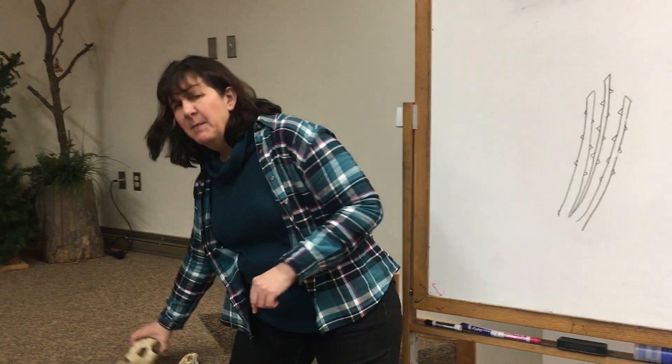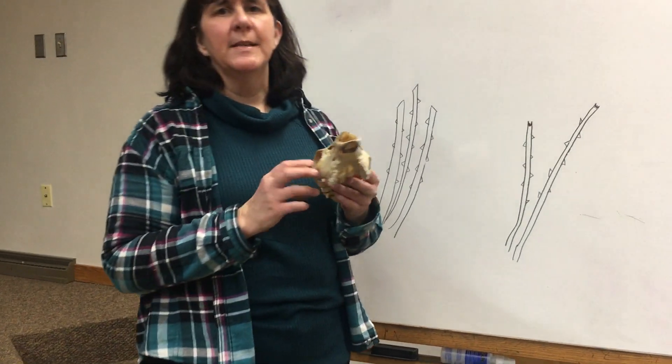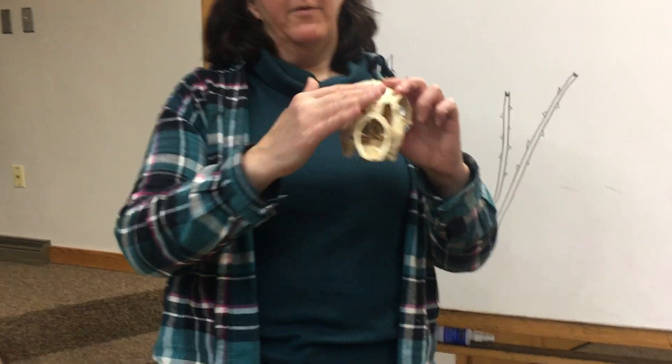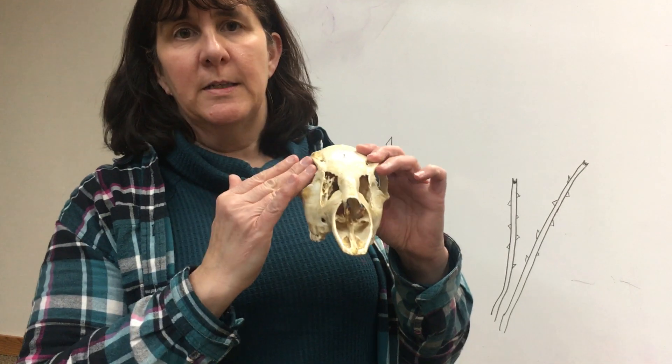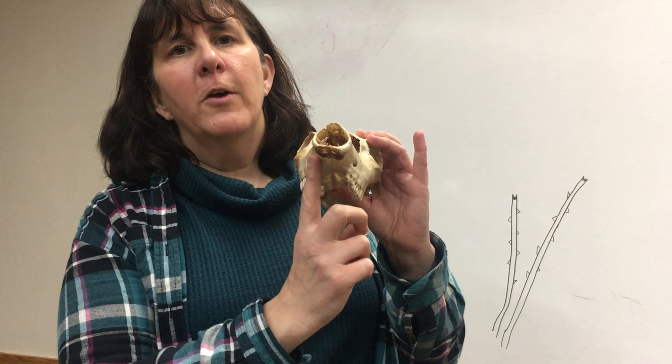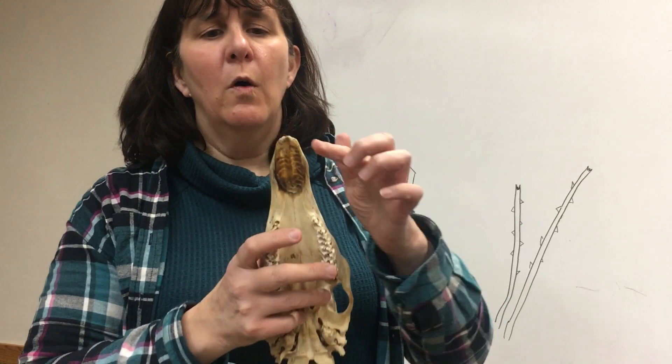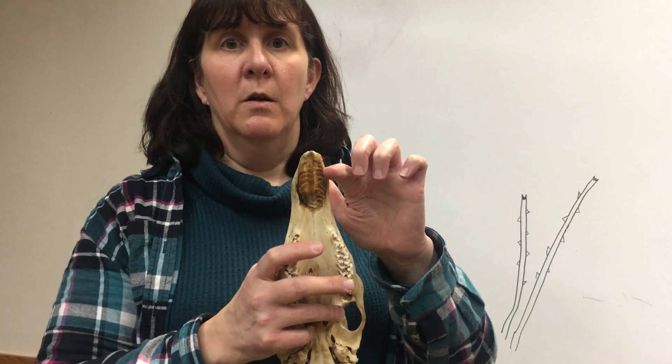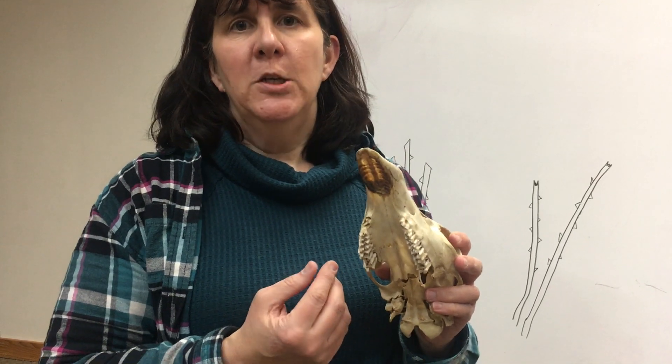Now deer, some people don't know this, deer are missing something. So we have the deer skull. Here's where his nose was, his eyes, his back teeth. But if you notice up here, there are no front teeth, and there's no holes. The teeth didn't fall out, there aren't any. Deer do not have top front teeth.